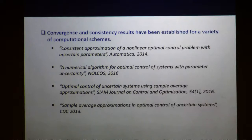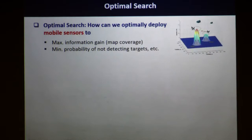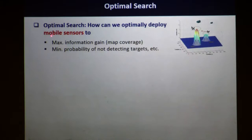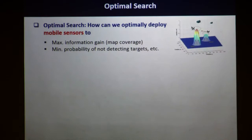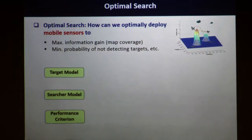Next, I will present an application of the uncertain optimal control problem in optimal search. Optimal search is a classical problem from operations research. In the optimal search problem, we try to detect an unknown target using mobile sensors equipped on unmanned vehicles. Control objectives can include maximizing information gain or maximizing probability of detecting the target. An optimal search problem requires three key components: a target model, a search model, and a function to measure the performance criteria.